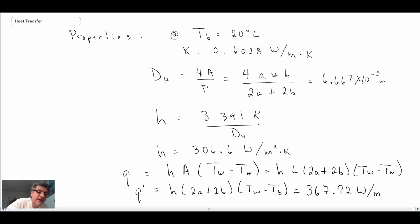And so we get 367.92 W/m for the heat transfer per unit length, and that is for our rectangular duct. Main thing is just looking up the value in the table for the Nusselt number and computing the length scale being the hydraulic diameter. So that is an example of performing a heat transfer calculation using non-circular geometry.